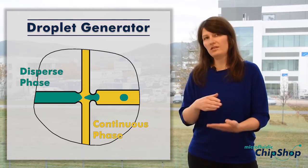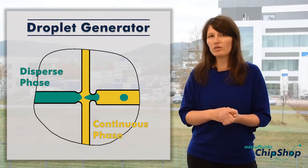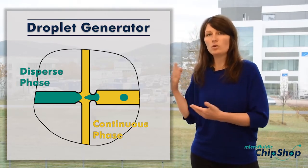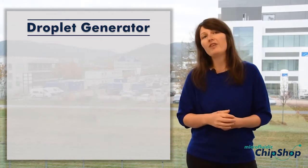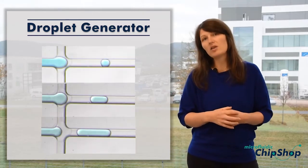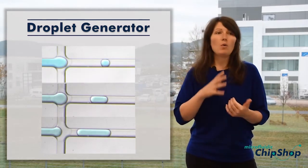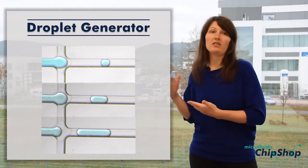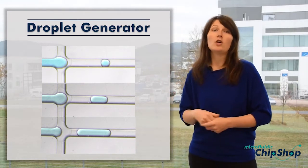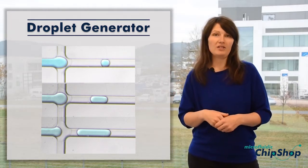The nozzle size and the ratio of the two phases — the sample phase, the dispersed phase, to the continuous phase — will define the size of the droplet, while the flow rates of the two phases will define the throughput of the entire droplet system.